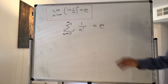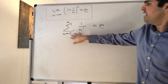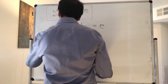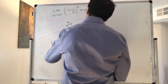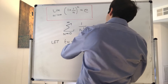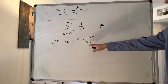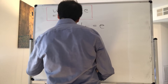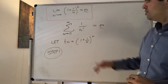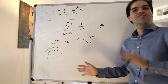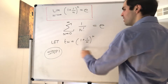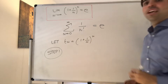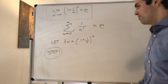Now, to show that this thing equals this, we need to consider partial sums. Let t_n be 1 plus 1 over n to the nth power. We want to show that t_n goes to e. Since we don't know the limit exists, we have to use liminf and limsup. We will show that the limsup of t_n is less than or equal to e, and that the liminf is greater than or equal to e.